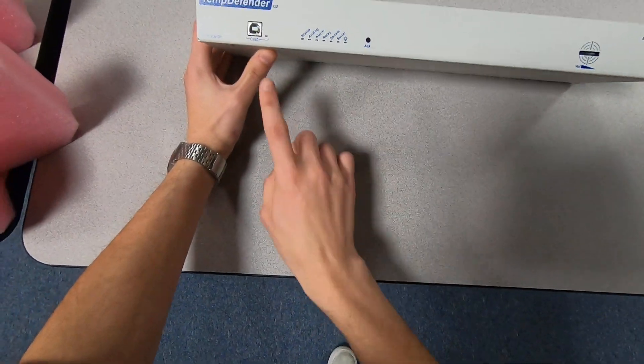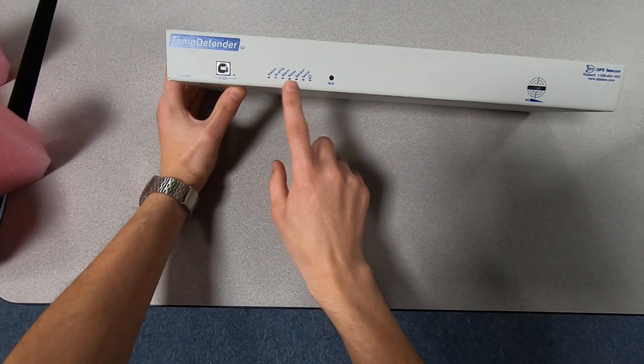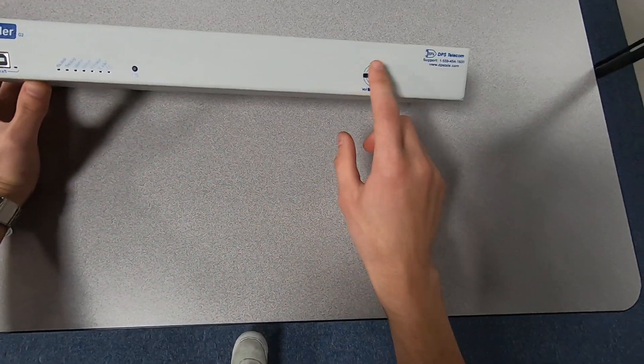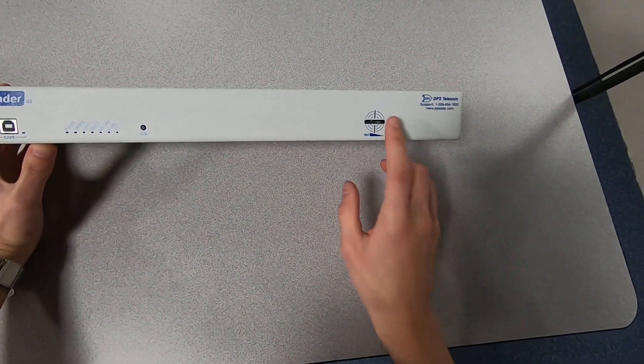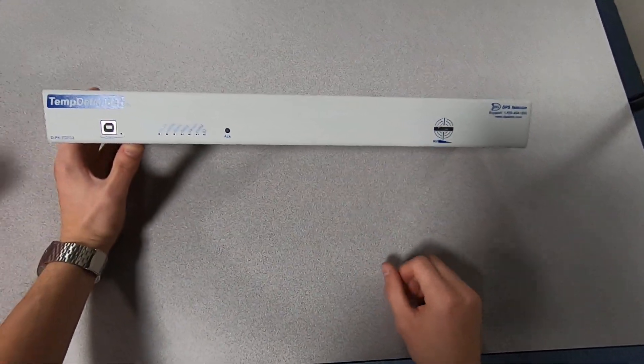On the front panel, we have our craft port, status LEDs, an ACK button, and a volume wheel. The Temp Defender G2 actually has a speaker inside, and you adjust the volume on that speaker with the volume wheel here.